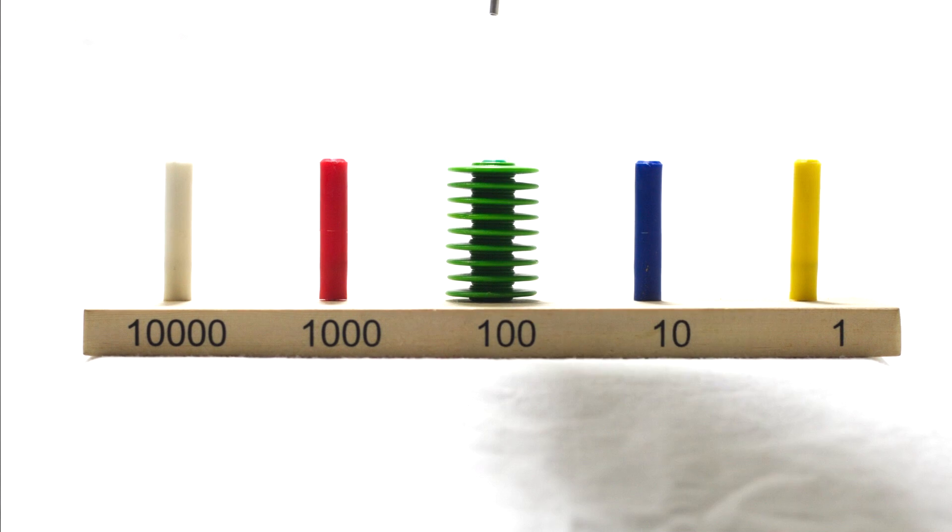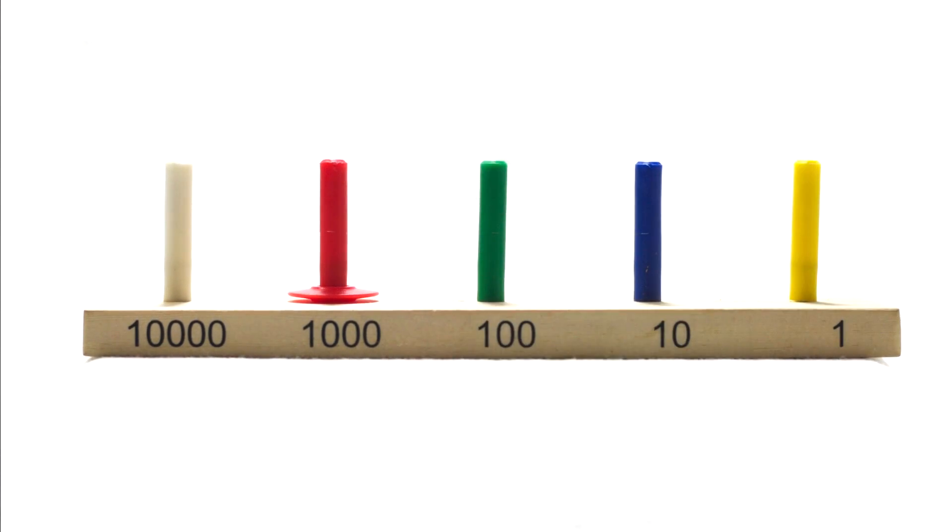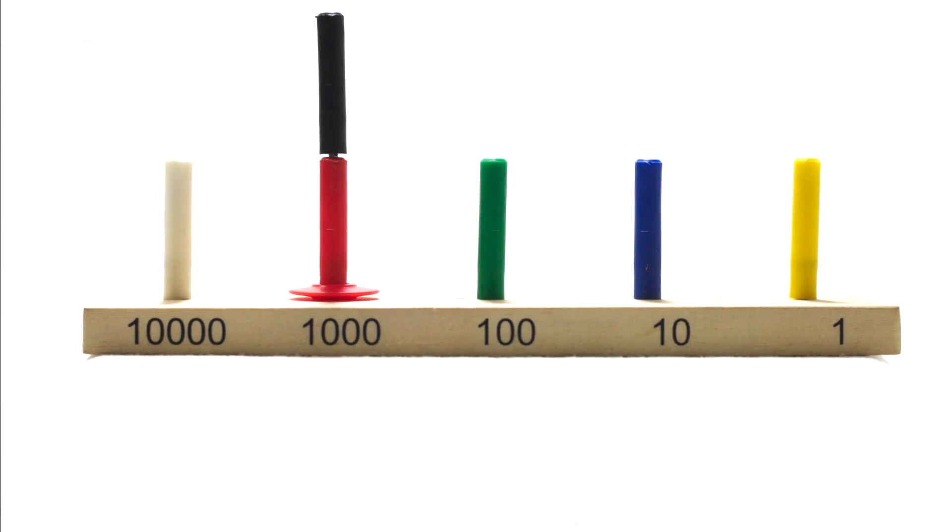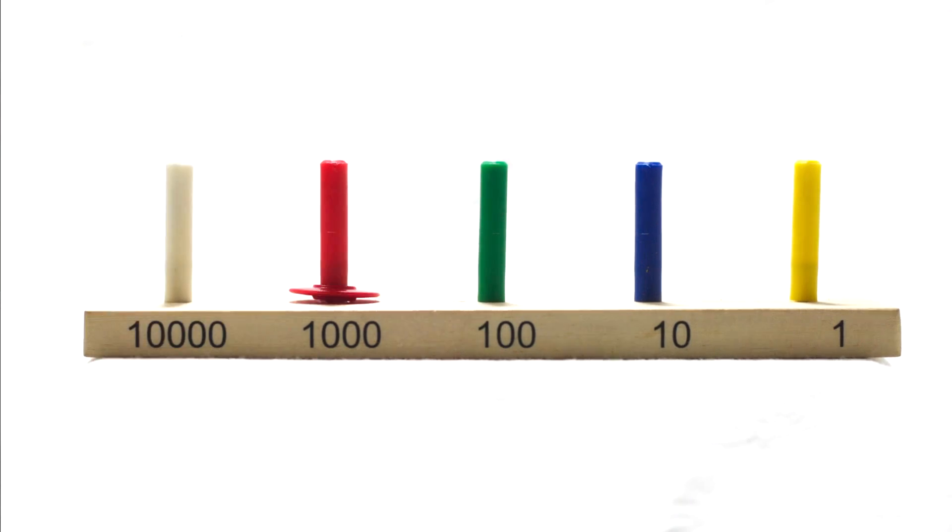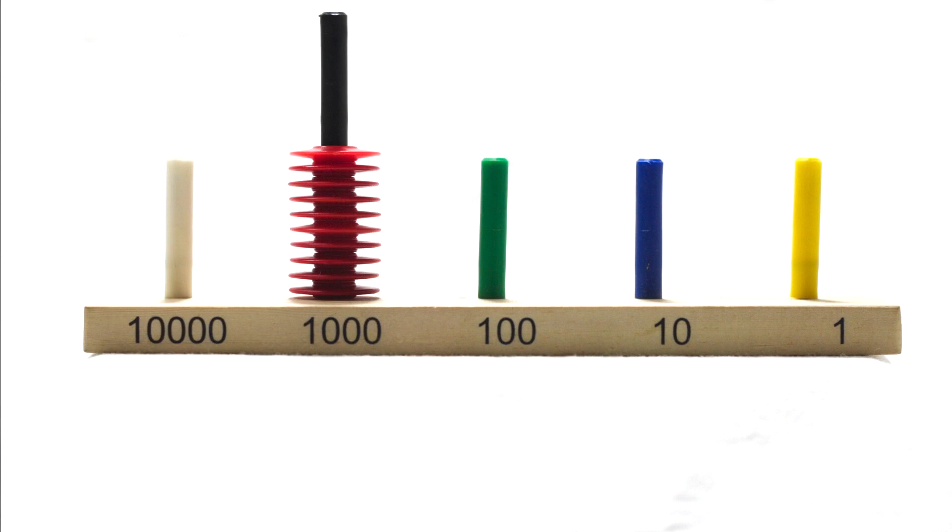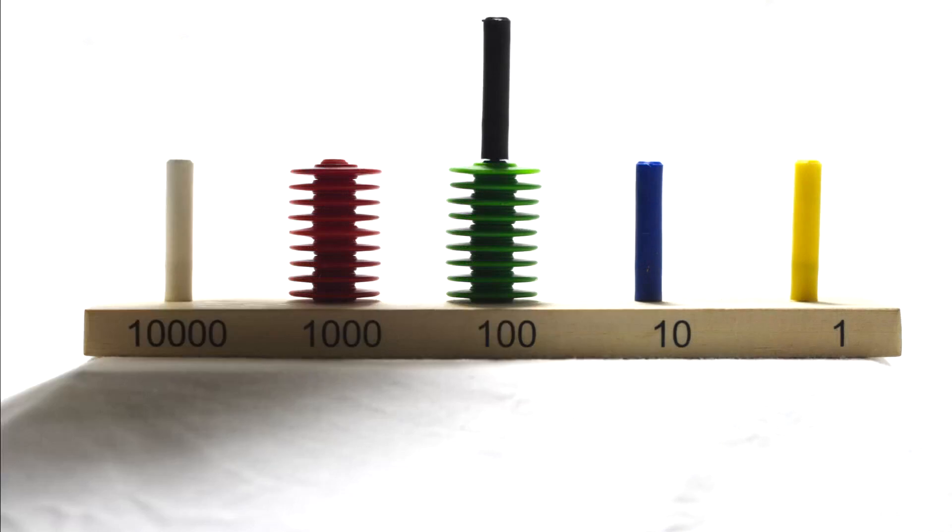Similarly, 10 blue rings are replaced by one green ring in the hundreds place. 10 green rings are replaced by one red ring representing a thousand. 10 red rings are replaced by one white ring representing 10,000. This is how the reverse works: one ring of 10,000 can be exchanged for 10 thousands. 1,000 can be regrouped as 10 hundreds and so on.